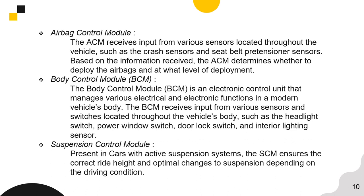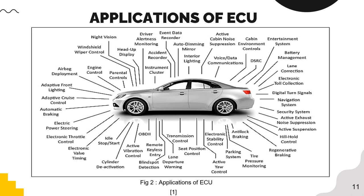The Airbag Control Module receives input from various sensors throughout the vehicle, such as crash sensors and seatbelt tensioner sensors. Based on this information, the ACM determines whether to deploy the airbags and the level of deployment. The Suspension Control Module is present in cars with active suspension systems, typically high-end vehicles, and ensures correct ride height and optimal suspension adjustment depending on driving conditions. These are all the applications of the ECU, and basically a vehicle works only because of the presence of an ECU.